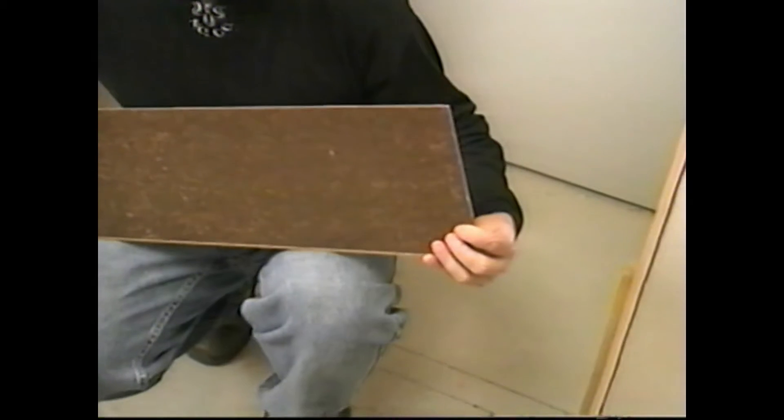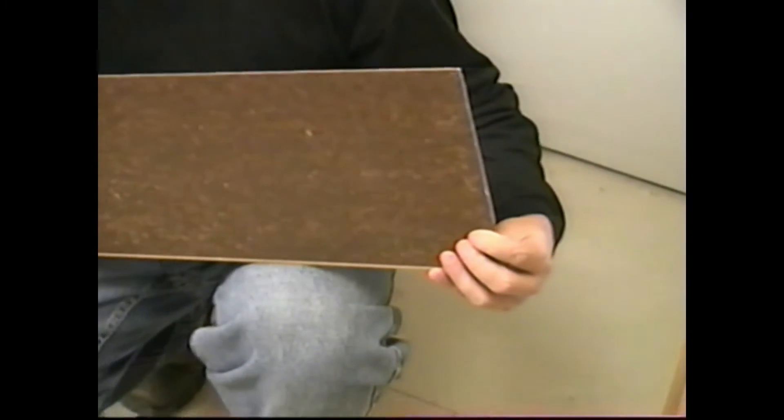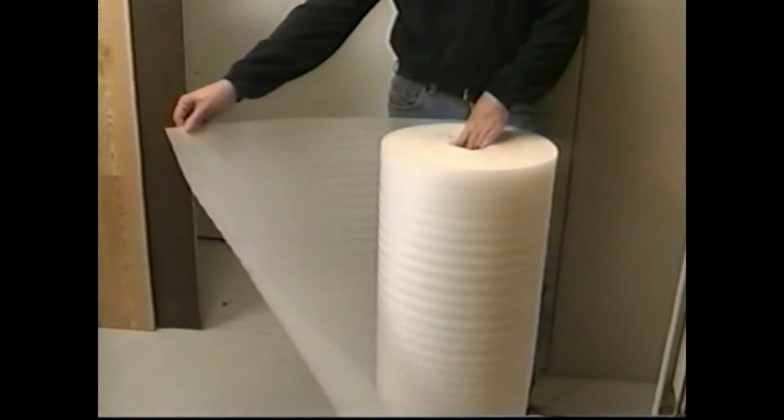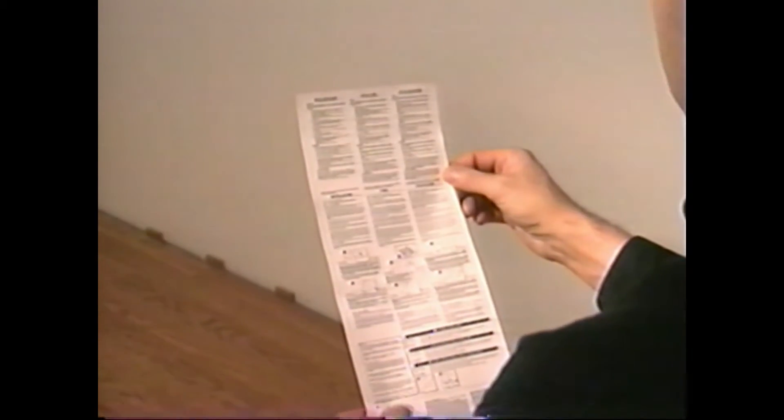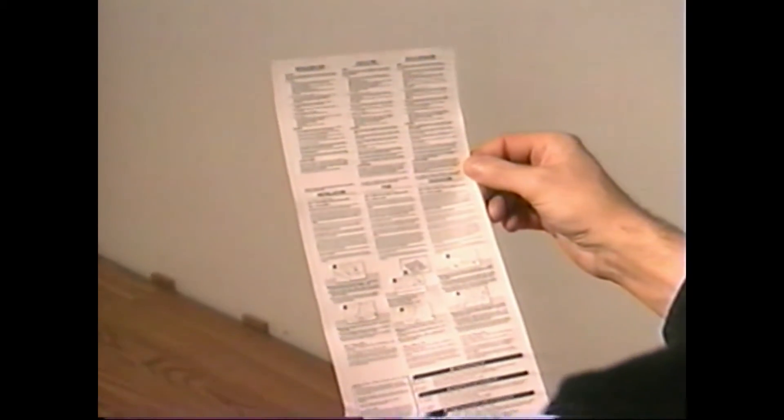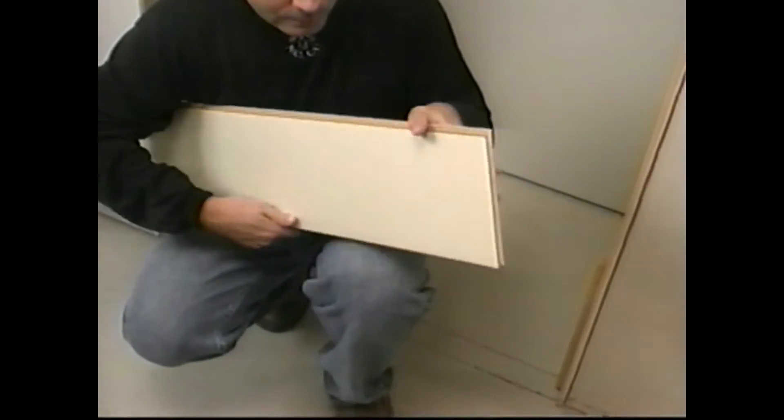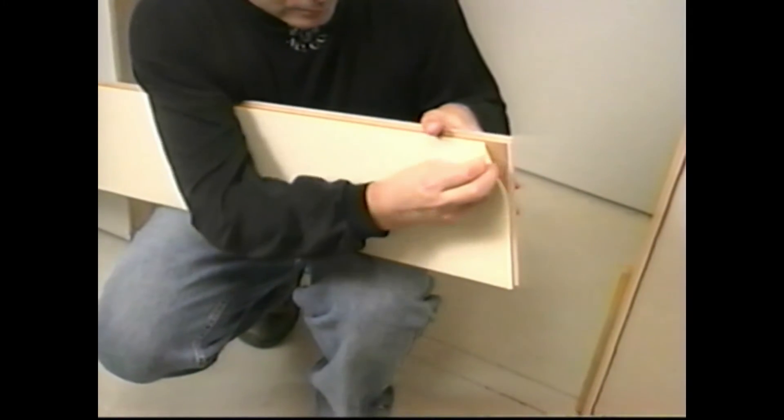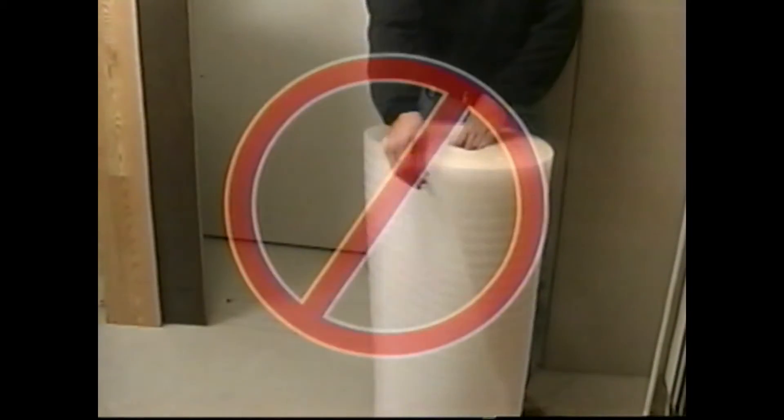Before beginning installation, remember that regular laminate flooring requires the installation of foam underlay. Consult the packaging for information on preparing the underlay and any other information that is not in this video. If you are using laminate flooring with a pre-attached foam underlay, no other underlay is needed.